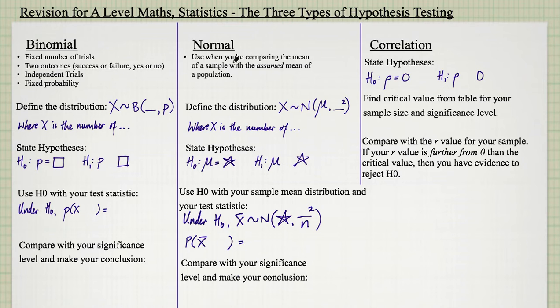In all of them, you're going to have to state hypotheses in the form of H0, the null hypothesis, and H1, the alternative. That happens in all three types of hypothesis tests.